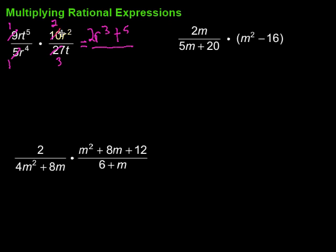I have r times r squared, which is r to the 3rd power, and then I have that t to the 5th on top. On the bottom I have a 2, and I've got a 3, and then I've got an r to the 4th and a t.